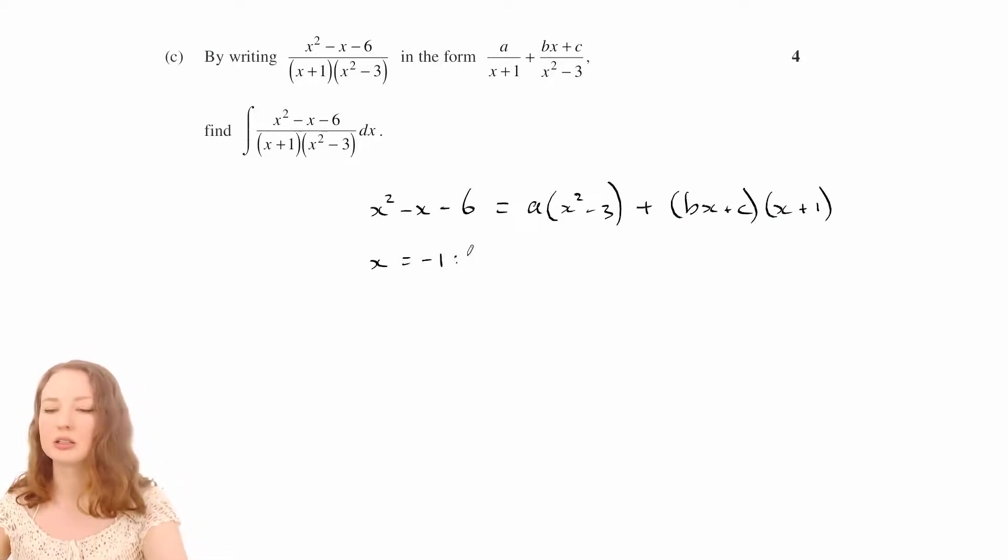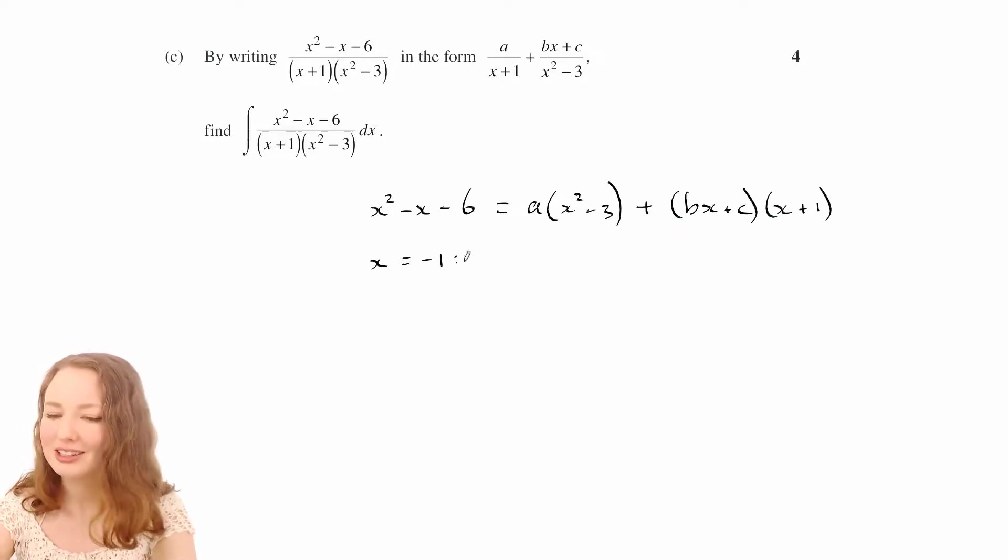That's going to make things really nice and simple. But I don't really want to set x to be root 3 to get rid of that one, because then there's going to be square roots everywhere and it's going to be annoying. So let's just start off by doing that.